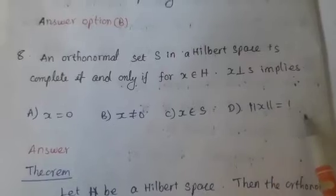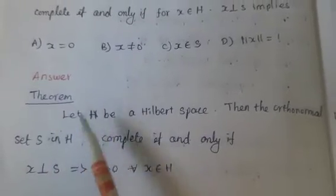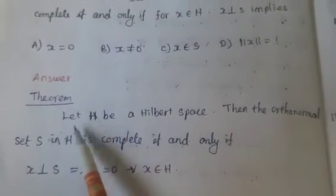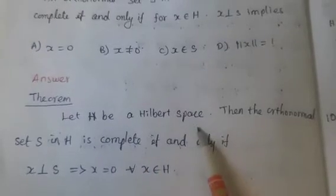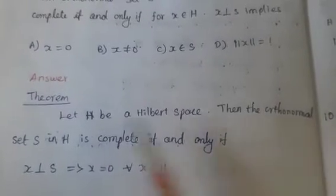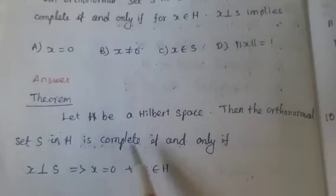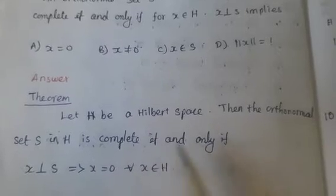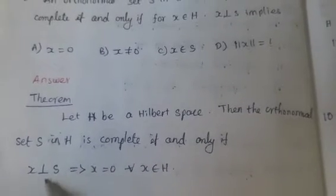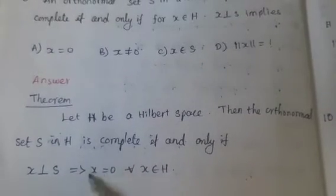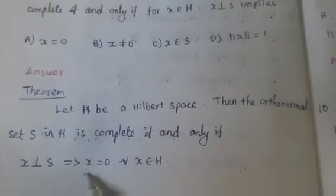The actual statement is: Let H be a Hilbert space. Then the orthonormal set S in H is complete if and only if X perpendicular to S implies X equals 0. Absent D, norm X equals 1.